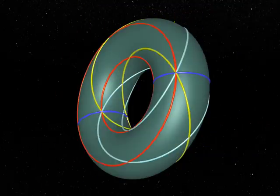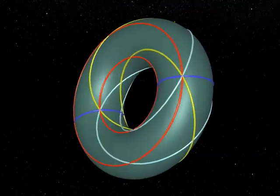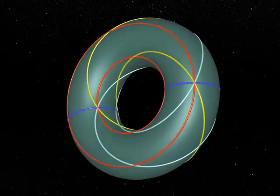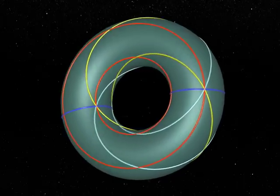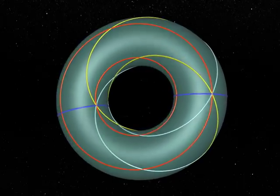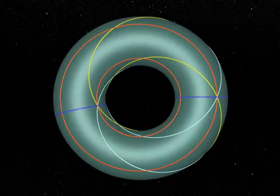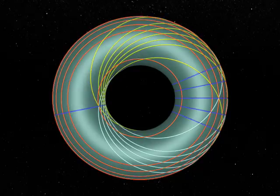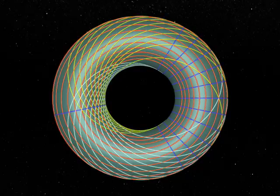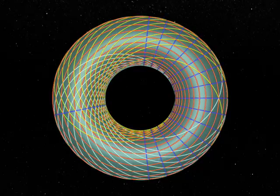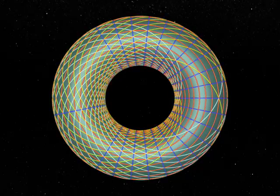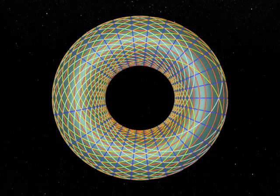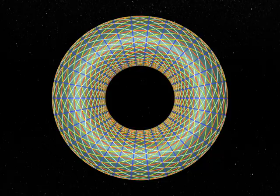Two circles of the same family do not intersect. A blue circle intersects a red circle in a single point. A yellow circle and a white circle intersect in two points. These are vilasso circles.